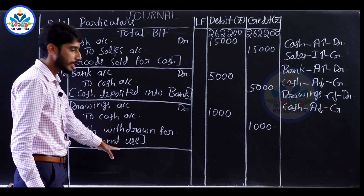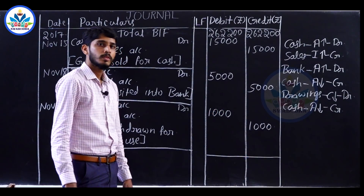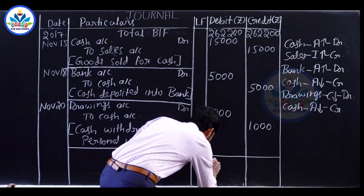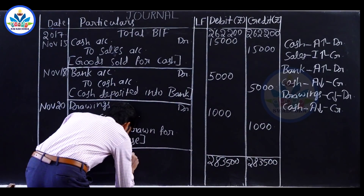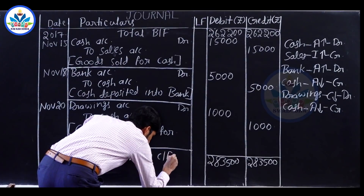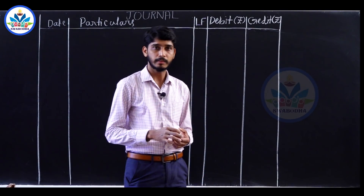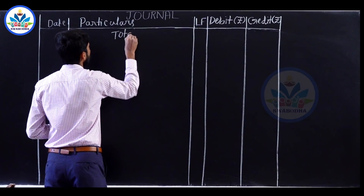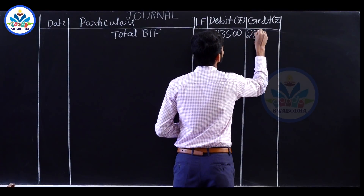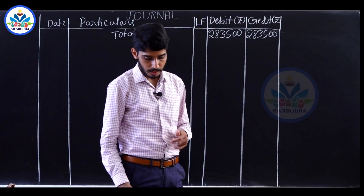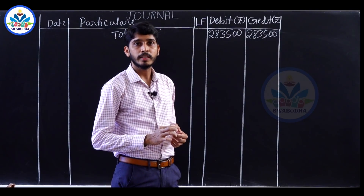We calculate the total of this page to carry forward. Total carried forward is ₹2,83,500. Total brought forward ₹2,83,500 is recorded on both debit and credit columns of the next page.